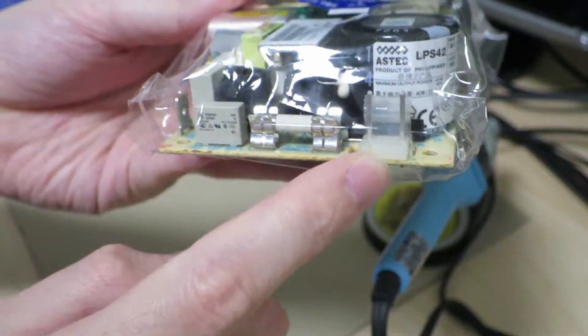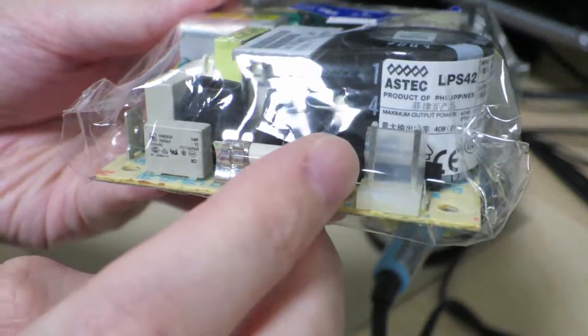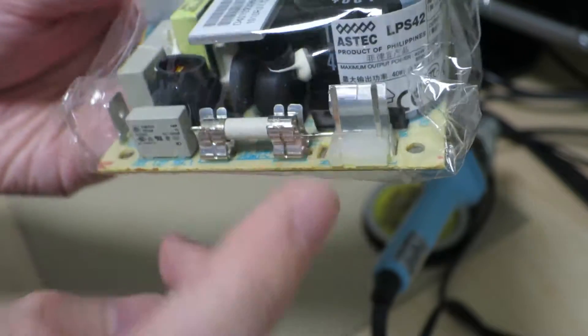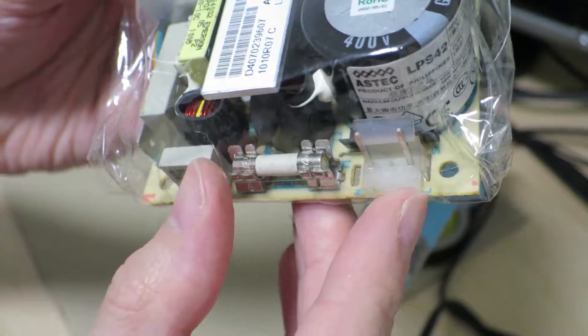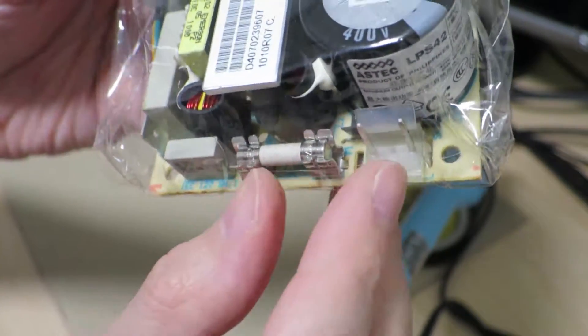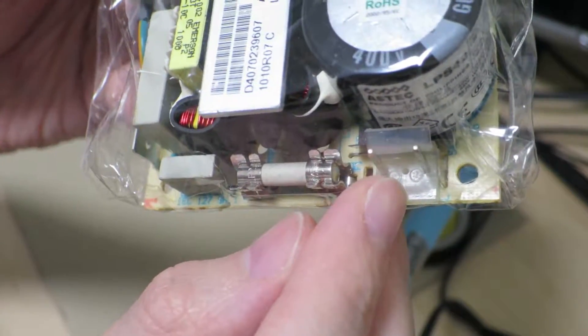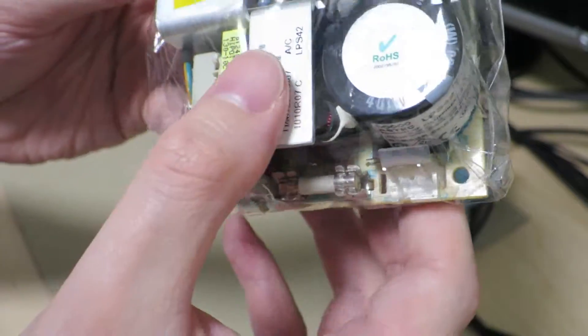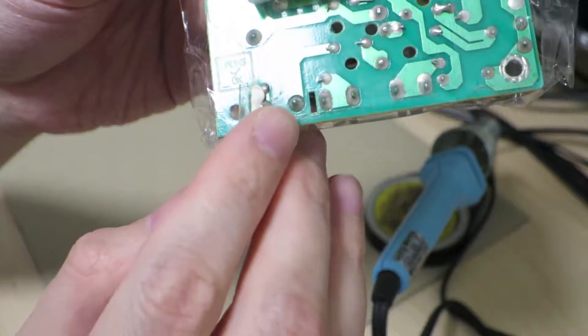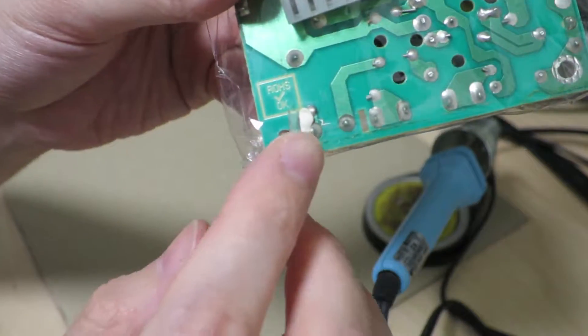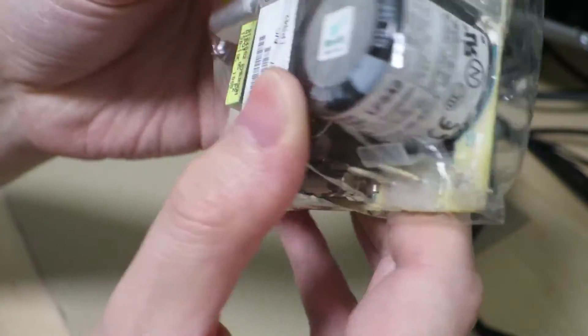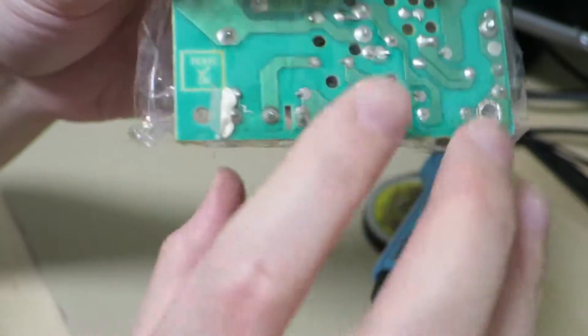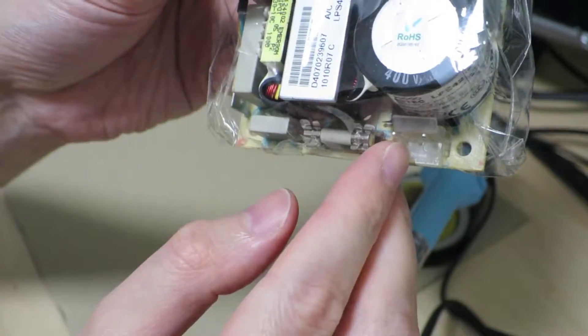All right, so there's one challenge to this. As you can see, there's only two pins on this terminal. One is for the live and the other is for neutral. And you can see that there's an open hole here, where there would be one extra pin. If you look at the back of the circuit board, you can see that there's no hole for where that missing pin is supposed to go.